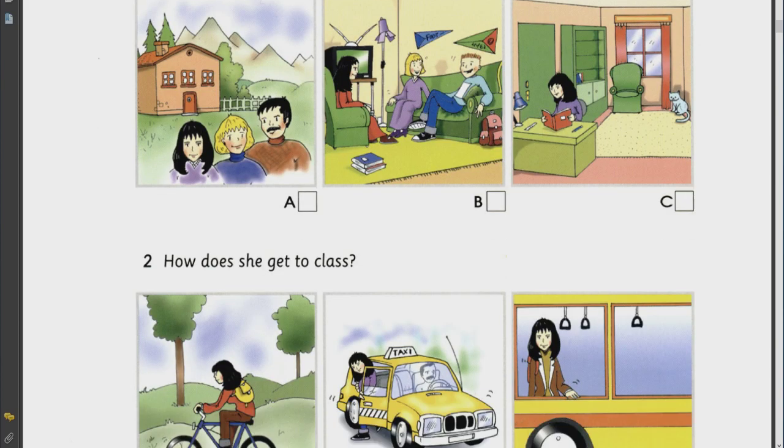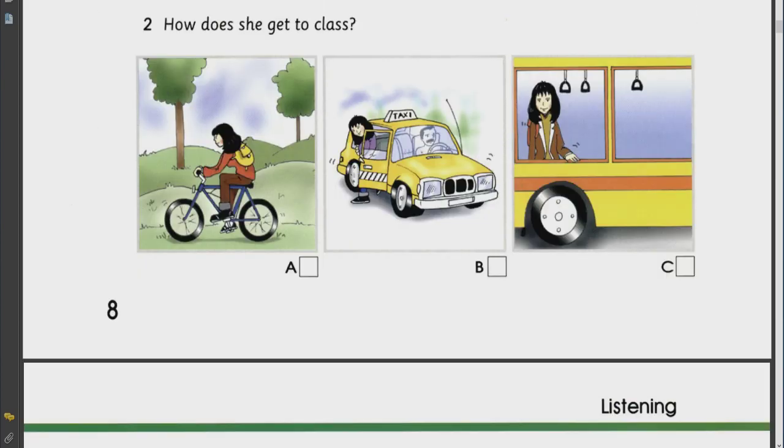Two. How does she get to class? Does your sister go to class by bus? No, she doesn't. There's no bus stop in her street. And she has classes early in the morning. So, what does she do? Does she take a taxi? No, that's too expensive. She rides her bike through the park.